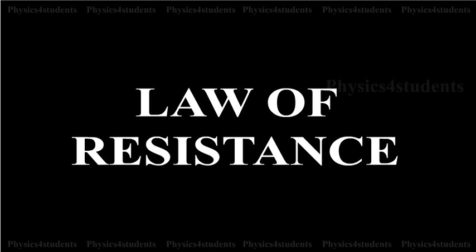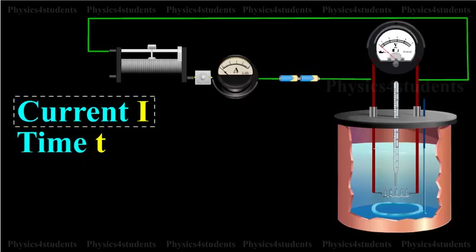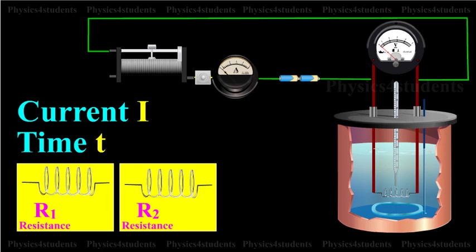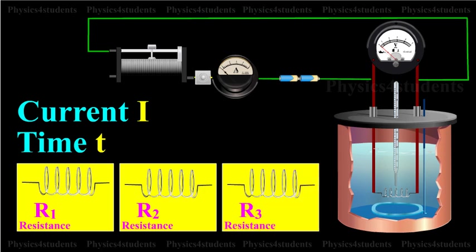The same amount of current is passed for the same time T through different coils of resistances R1, R2, R3, etc. The corresponding quantities of heat gained, H1, H2, H3, etc. are calculated.